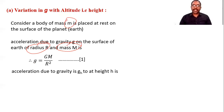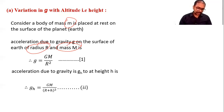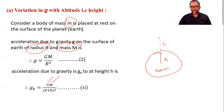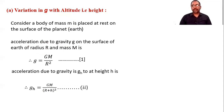Now, acceleration due to gravity at height h — when a body is placed at height h from the surface of Earth. G is the same, mass of the Earth is unchanged, but the distance becomes R plus h. So the formula becomes: g_h = GM/(R+h)². This is equation number two.